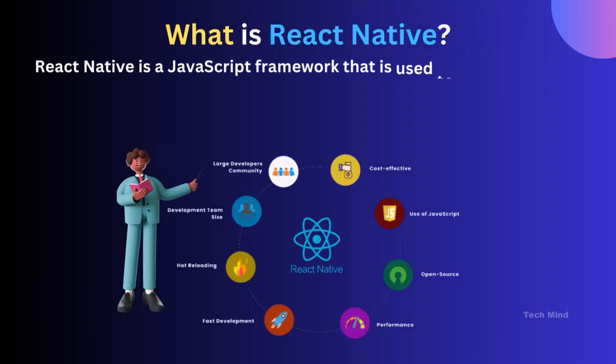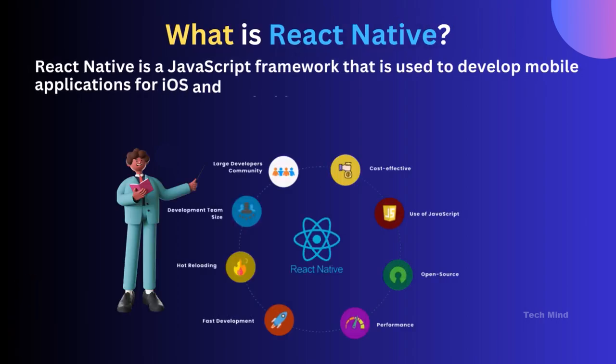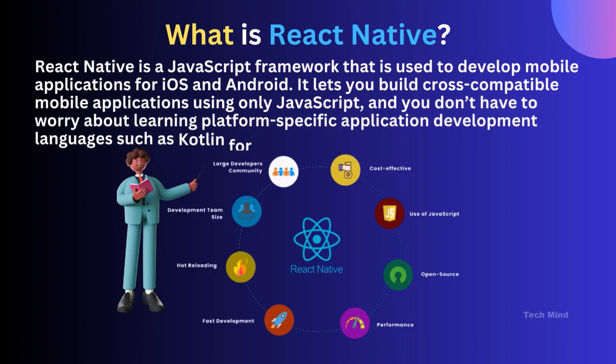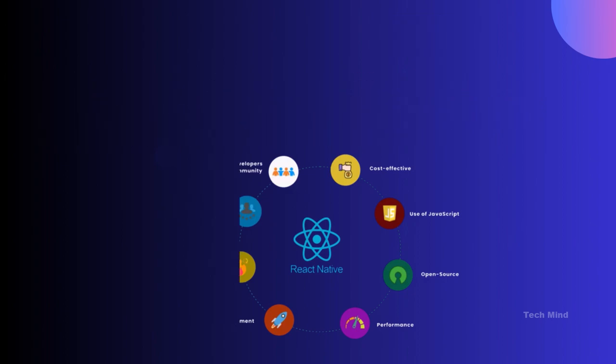What is React Native? React Native is a JavaScript framework that is used to develop mobile applications for iOS and Android. It lets you build cross-compatible mobile applications using only JavaScript, and you don't have to worry about learning platform-specific development languages such as Kotlin for Android or Swift for iOS. React Native applications are real mobile applications and not just web applets. Facebook released the first version of React Native in March 2015.